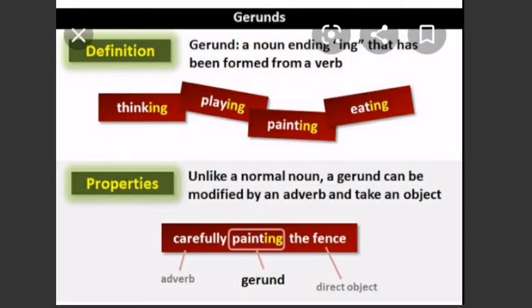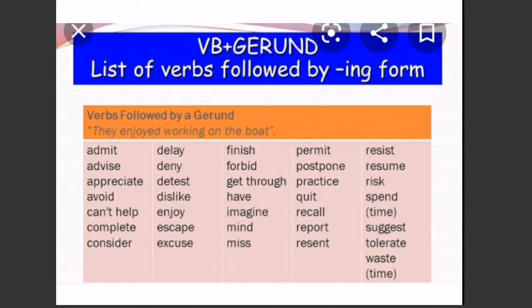Next: gerunds. A gerund is a noun formed from a verb, ending in ing. For example: thinking, playing, painting, eating. Properties: unlike a normal noun, a gerund can be modified by an adverb and take an object. Recognition: the verb is always in ing form. When two verbs are used in a sentence, some verbs are followed by a second verb in the ing form — that second verb is always a gerund. There are some verbs followed by the ing form — keep this in mind.